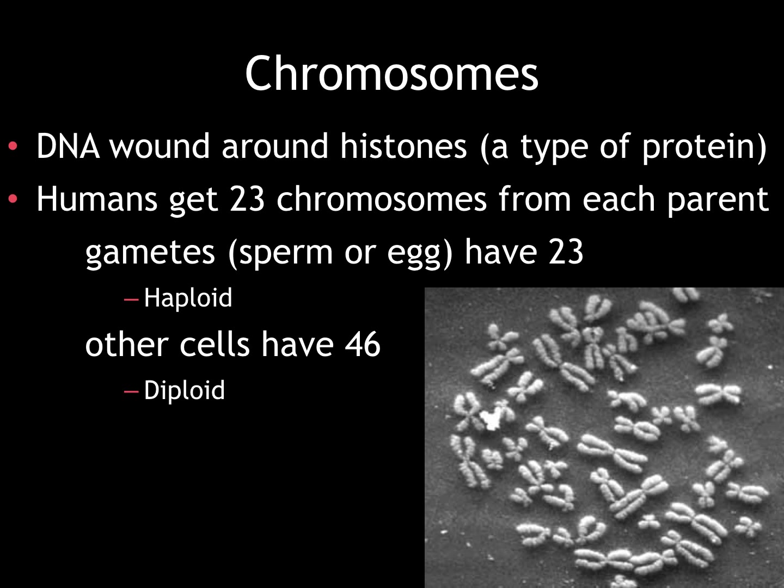The exception to this are gametes, which are sperm or egg cells. These only have 23 chromosomes, and we call these cells haploid.